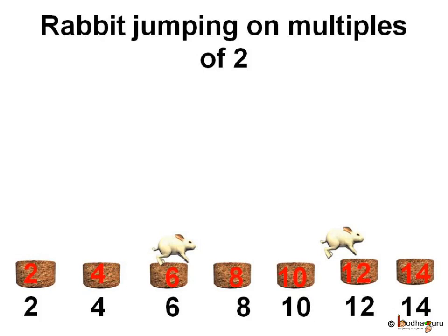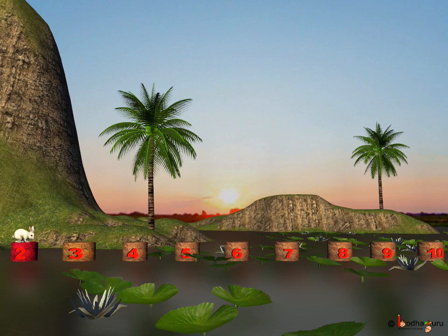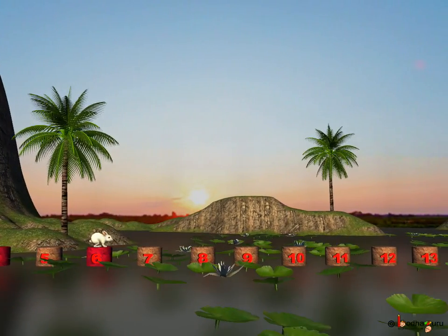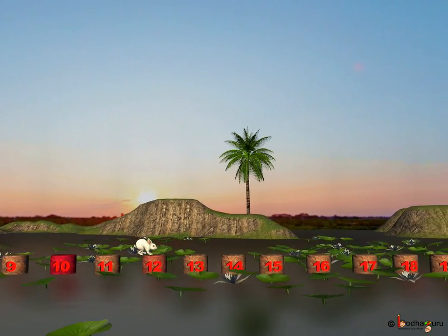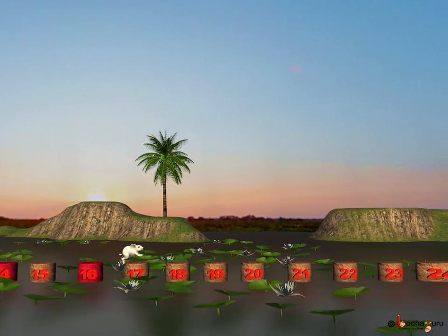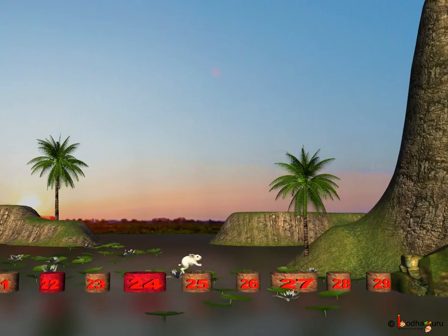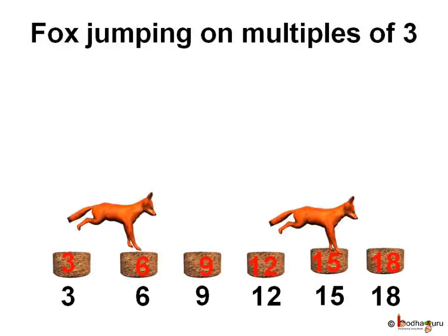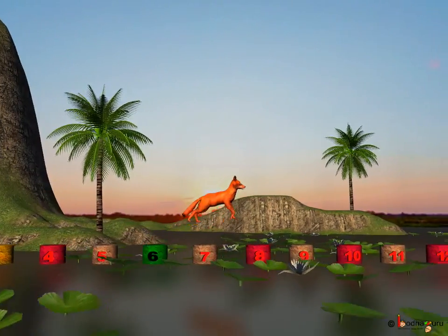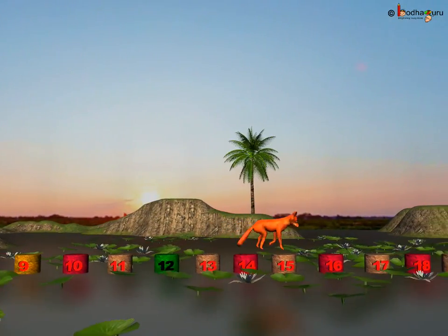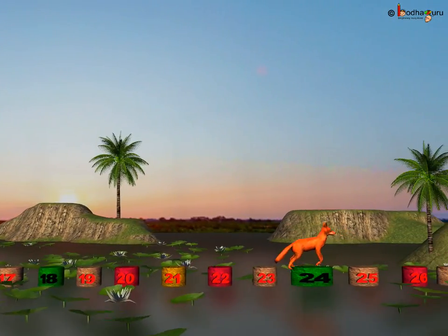They are jumping in multiples of 2 and 3. If the rabbit started from 2 and could jump every second step, and the Fox could jump in the multiple of 3. Then, what all stones could they both use? The rabbit would jump on 2, 4, 6, 8, 10, 12, 14, 16, 18, 20, 22, 24. The Fox would jump on 3, 6, 9, 12, 15, 18, 21, 24.